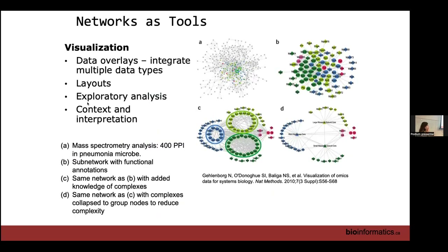Here's an example of visualization: on the left, these are the exact same network represented in different ways. In figure A you have a hairball — difficult to understand. In C, things are divided according to complexes and what interacts with those complexes — much simpler. In D, those complexes are collapsed, further reducing complexity. It depends on what message you're trying to portray. I would argue you should never show a hairball, though publications show them often — mostly to say 'look at all the data we have.'